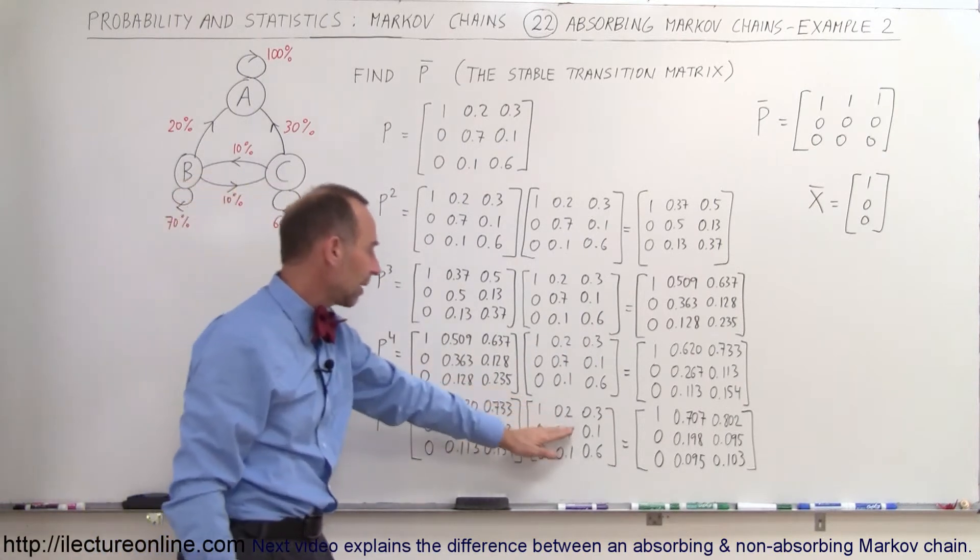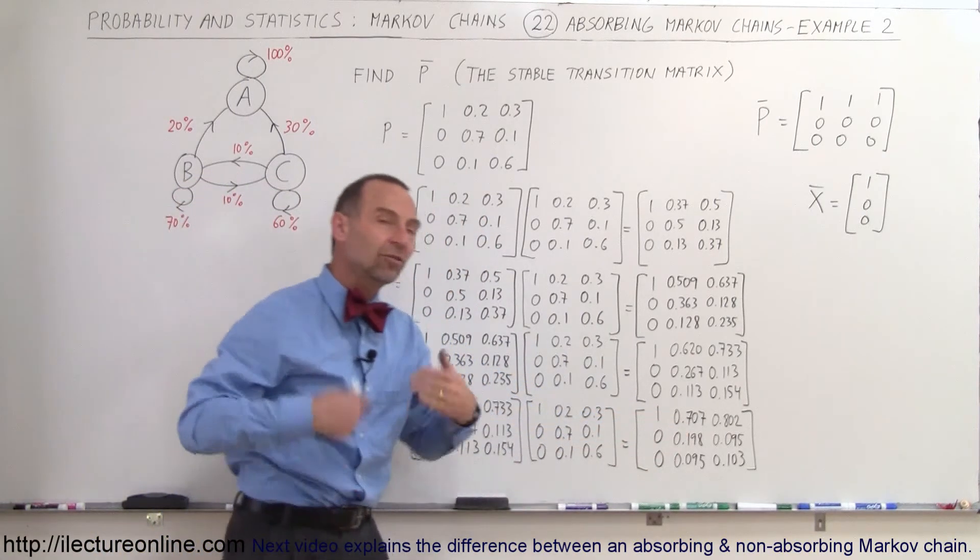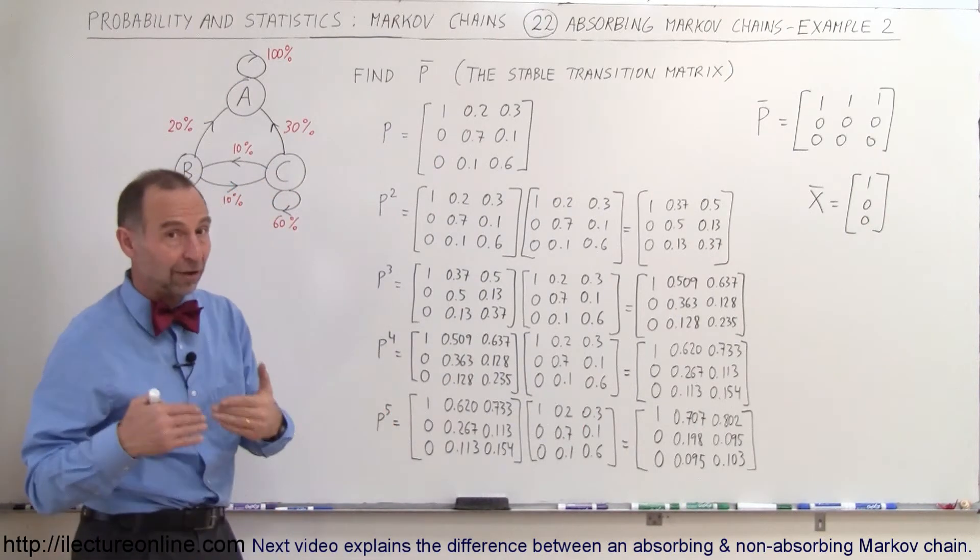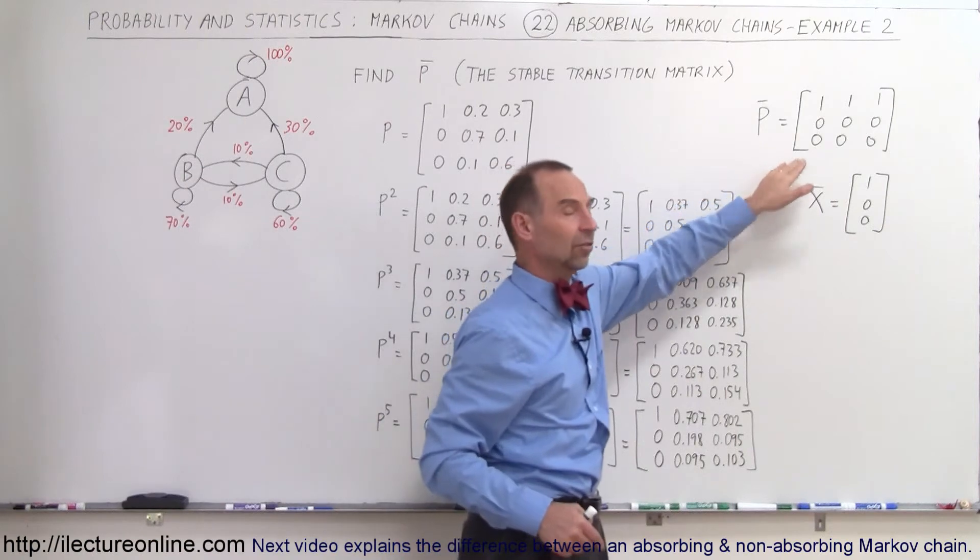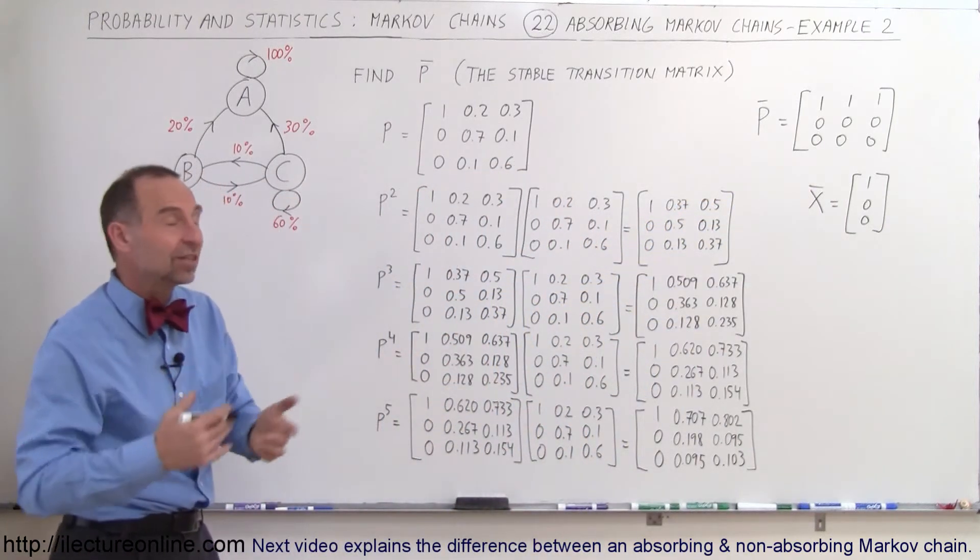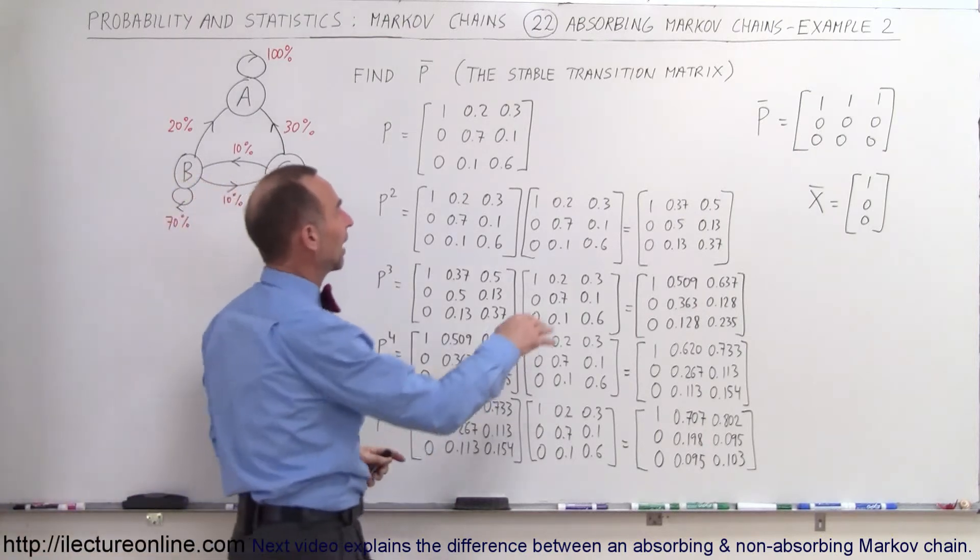We then take that result, multiply times the transition matrix to get P to the fifth, and so forth. And if we keep doing that until we get P to the N where N is a very large number, it eventually should look like this. The question now is, does this matrix appear to be reaching that goal?